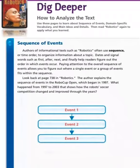Look at page 738 in 'Robotics.' The author explains the sequence of events in the RoboCup Open, which began in 1997. What happened from 1997 to 2003 shows how the robot soccer competition changed and improved through the years.